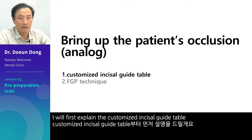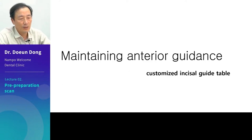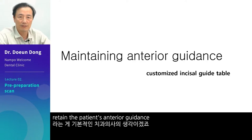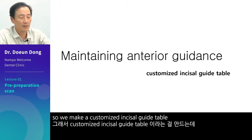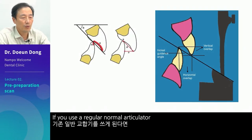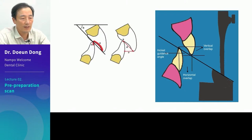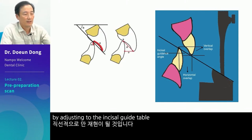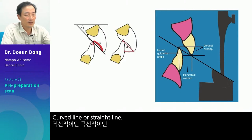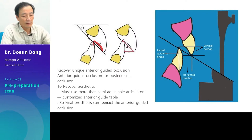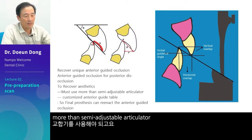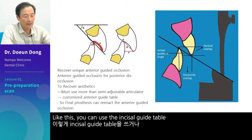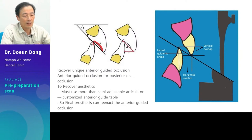I will first explain the customized incisal guide table. The dentist will usually want to retain the patient's anterior guidance, so we make a customized incisal guide table. If you use a regular normal articulator, you won't be able to reenact the curve — it will only be able to reenact a straight line by adjusting to the incisal guide table. You have to use a more than semi-adjustable articulator. You can use the incisal guide table or make a customized guide table so that we can transfer the patient's anterior guidance to the final prosthesis.